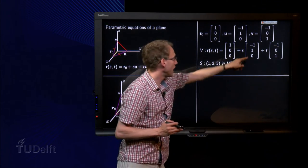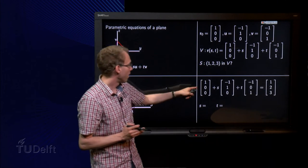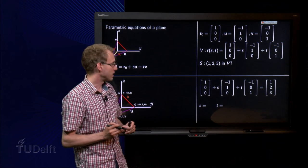The question is, can we find values s and t such that R of s and t is exactly equal to 1,2,3? So let's take a look.